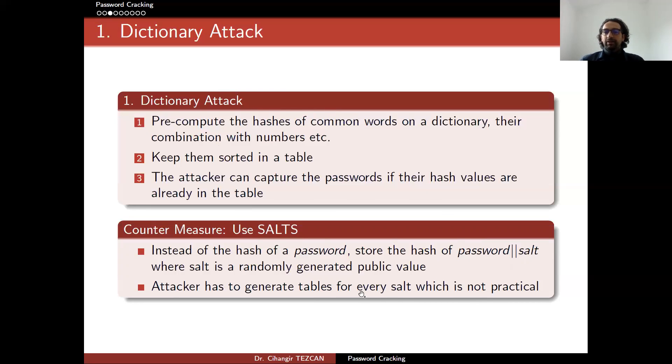Because the attacker has to generate tables for every salt value. For instance, if you keep salts really short, 8-bit, this means that a password can be concatenated to 256 different values. So this makes the attacker's work only 256 times harder. So instead of generating such a dictionary, the attacker has to concatenate every salt value at the end of these passwords and generate a dictionary for all of the salt values. Which means that the attacker has to generate 256 different dictionaries to perform the attack.